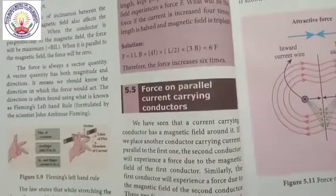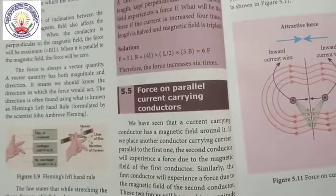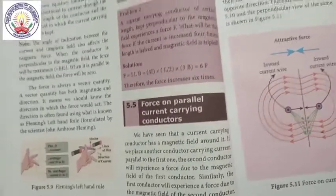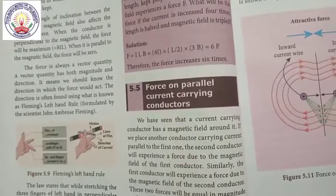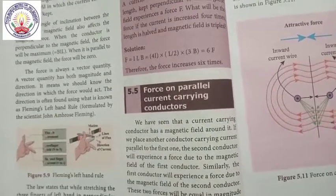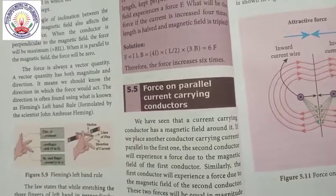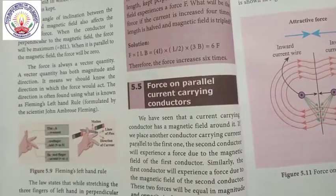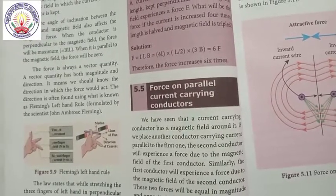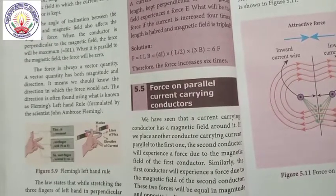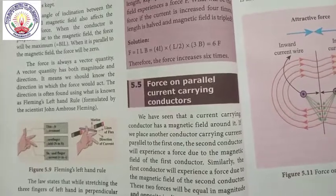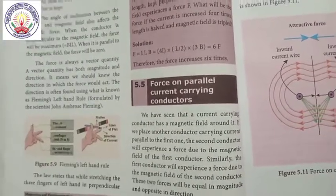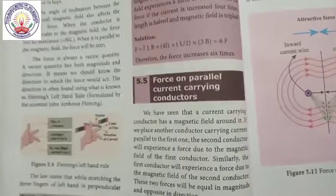Force on parallel current-carrying conductors. We have seen that a current-carrying conductor has a magnetic field around it. If we place another conductor carrying current parallel to the first one, the second conductor will experience a force due to the magnetic field of the first conductor. Similarly, the first conductor will experience a force due to the magnetic field of the second conductor. These two forces will be equal in magnitude and opposite in direction.